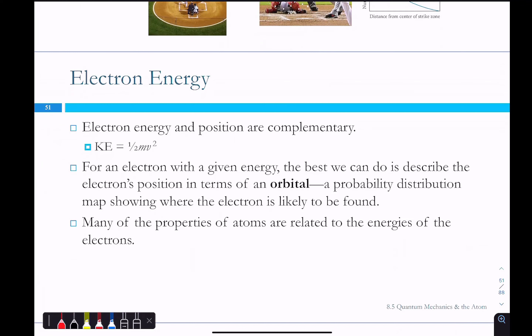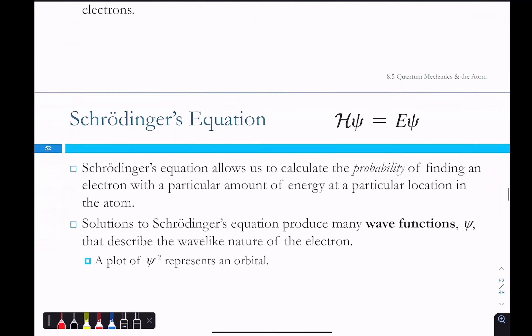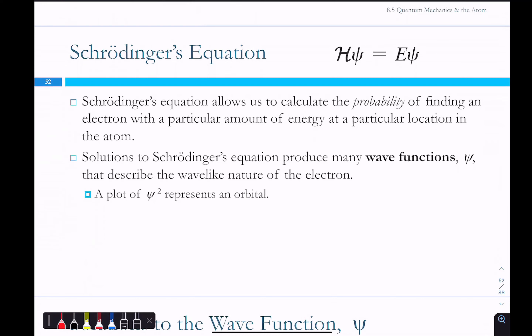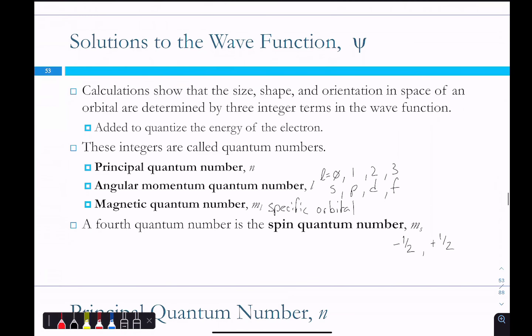The electron's energy and position are complementary. Mass times velocity gives the kinetic energy of an electron — you can determine the velocity and that tells you the energy, but it doesn't tell you where it is. The best we can do is describe the electron's position in terms of an orbital. Those were the probability density maps in three dimensions that you were looking at last week — where the electron could be, or is most likely to be. Schrödinger's equation defines all of those orbitals as wave functions; a plot of φ² represents one of those orbitals. The different parameters that go into Schrödinger's equation give out the different orbitals.